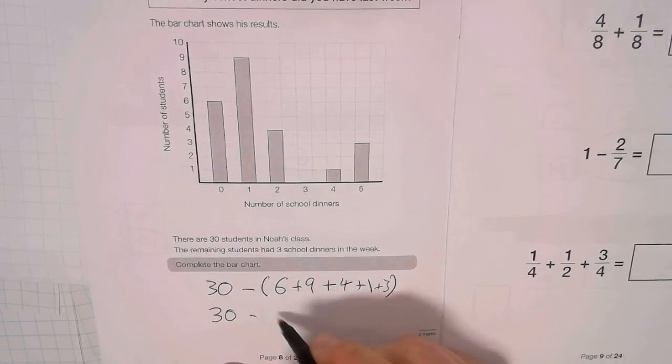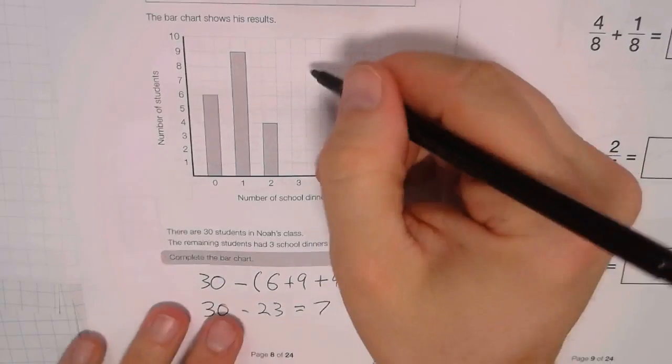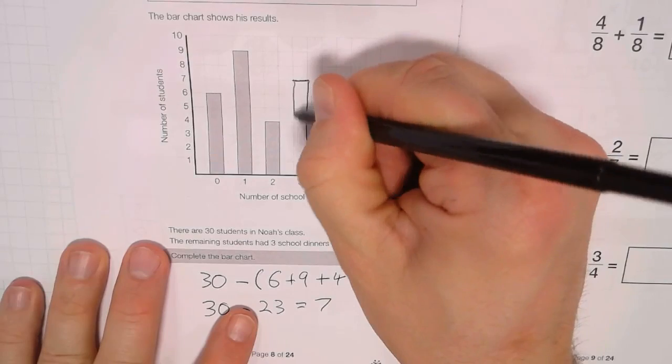So it's 30 take away 23, which is 7. And then you want to draw your bar chart up to 7, and that's that.